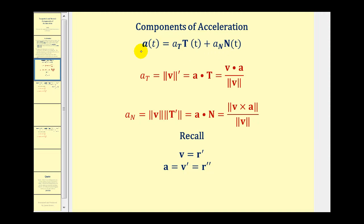The acceleration vector valued function is equal to the tangential component of acceleration times the unit tangent vector valued function, plus the normal component of acceleration times the unit normal vector valued function. There are several formulas to determine these components, but we're going to be using the last formulas in this video.